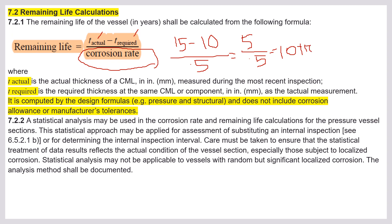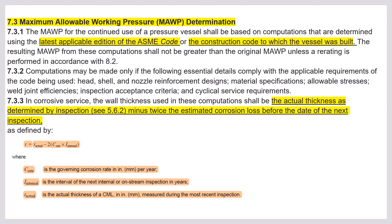To summarize: for long-term corrosion rate we use t_actual and t_initial. For short-term we use t_previous, not t_initial — always remember short-term uses t_previous. Once we get the corrosion rate, we use t_actual and t_required, divide by the corrosion rate, and find the remaining life.